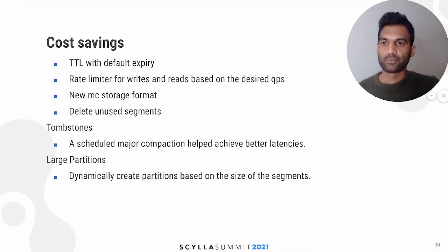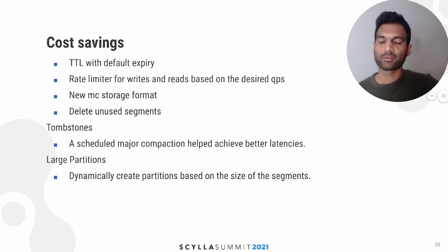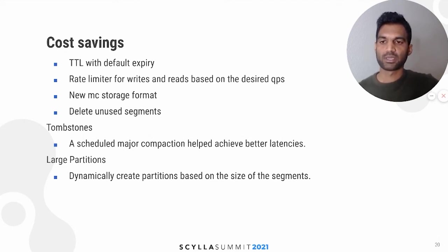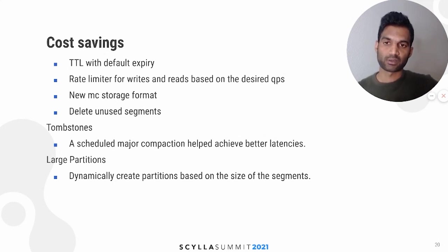For cost savings, we introduced TTL with a default expiry so that most segments get deleted after the TTL expires. For non-critical use cases, we define rate limiters for writes and reads based on the desired QPS so as not to overload the database. We also upgraded to a new storage format, which is not a default setting in ScyllaDB Enterprise, and deleted segments no longer in use. Doing all these actions helped us reduce cluster size and storage size by more than 50 percent.